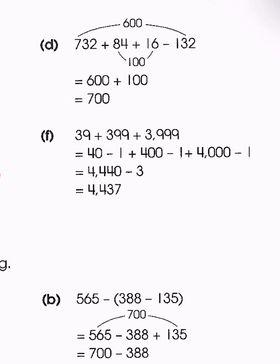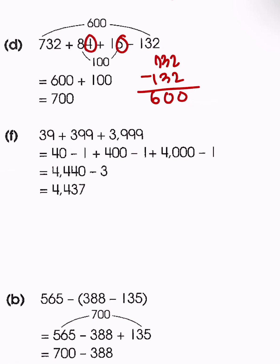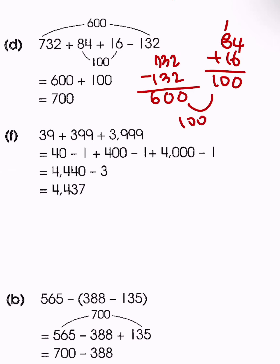Now we're solving a similar type of problem but with subtraction involved. Since it's addition and subtraction only, we can rearrange to make calculations easier. We see two numbers with the same ending — one with a negative sign and one with a positive — so subtracting those gives a number ending in zero, equal to 600. We also have two numbers ending in 4 and 6, so adding them gives 100. The total is 700.